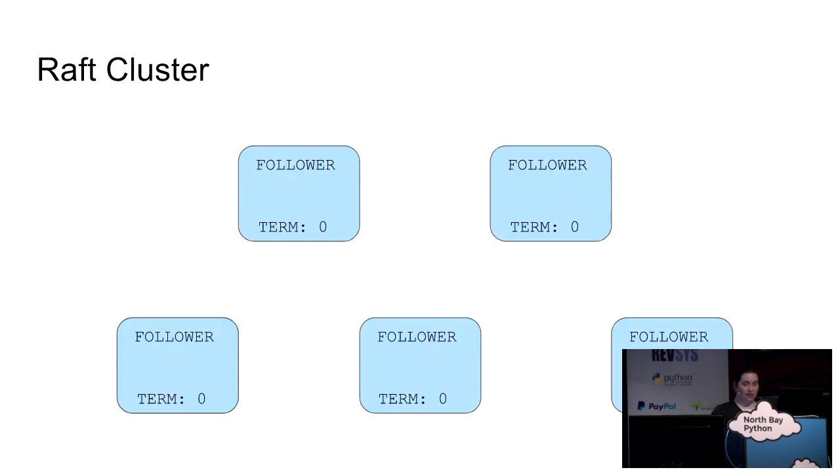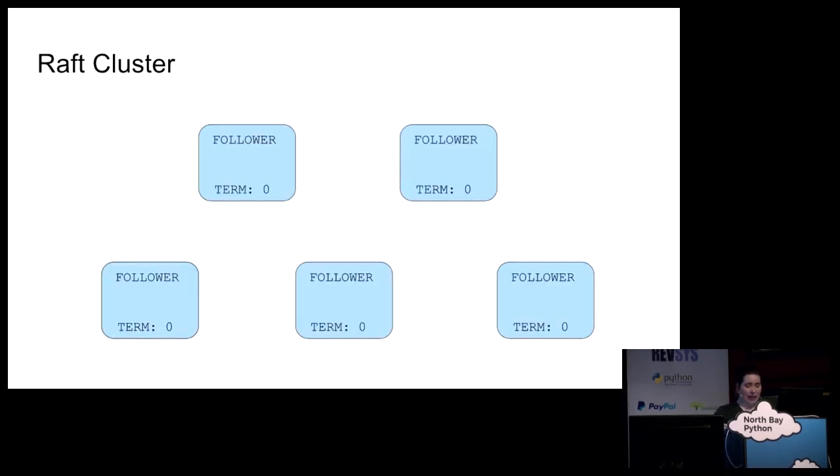So let's take a look at a Raft cluster. All Raft participants are identical and any of them can serve as leader if their logs meet certain conditions. All of the participants start as followers. Raft can recover from network partitions and participant failures and is resistant to fail recover and fail stop of any member of the cluster. So let's run an election.